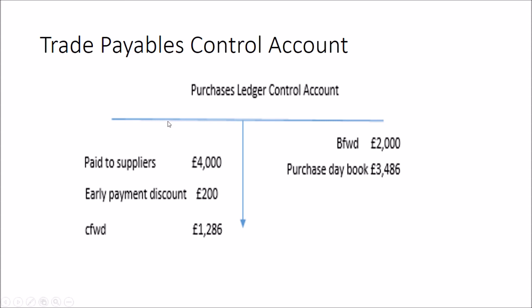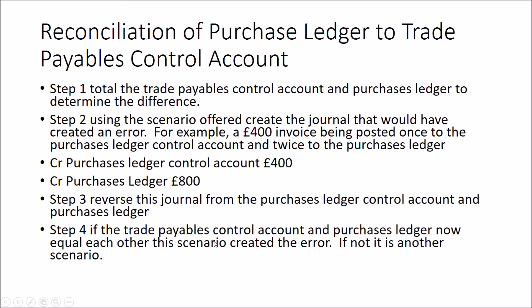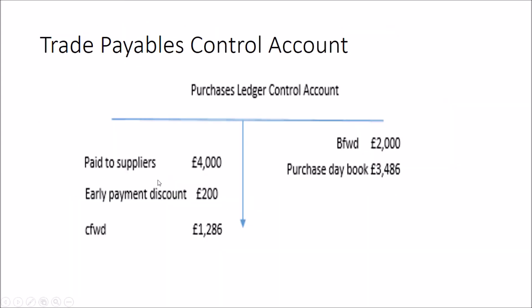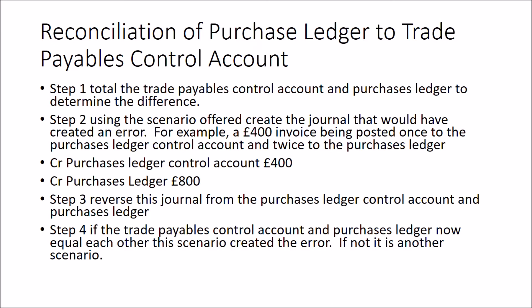Although we have the trade payables account showing the final total position, we don't actually know which suppliers that figure is made up of — it might be five or six different suppliers. In order to know who to pay, we have the purchase ledger: a series of T accounts that make up that total figure. You'll always be looking to reconcile the purchase ledger to the trade payables control account.